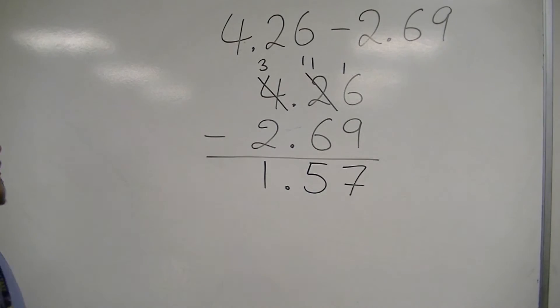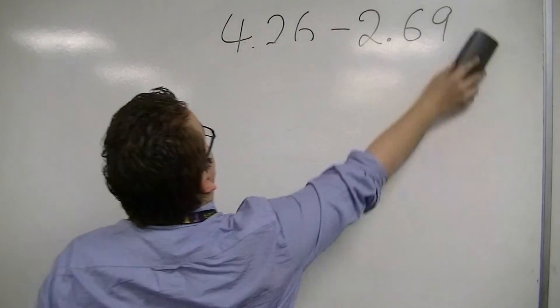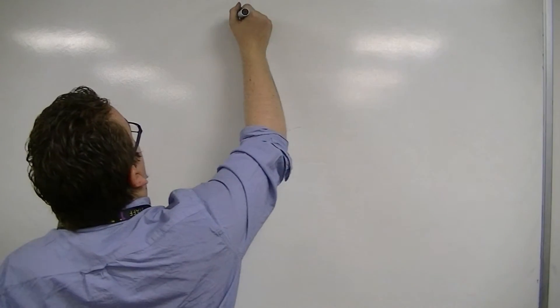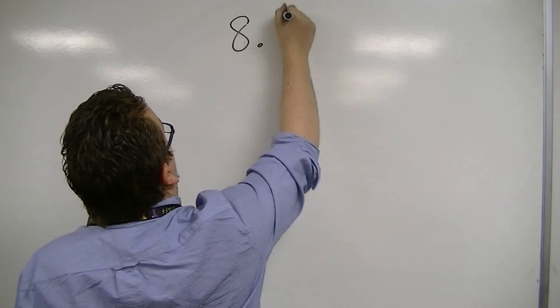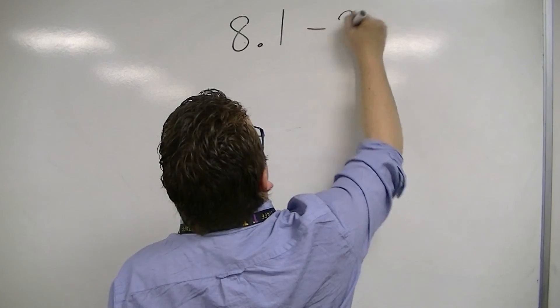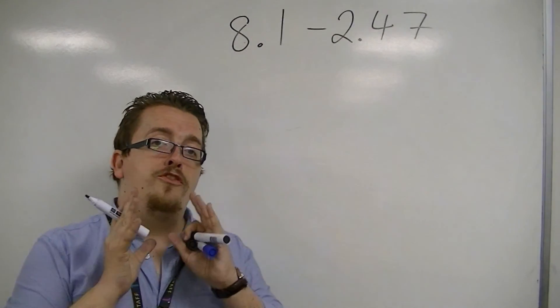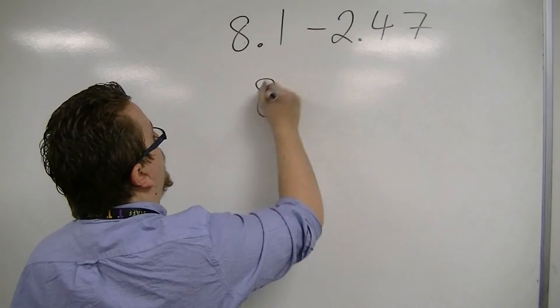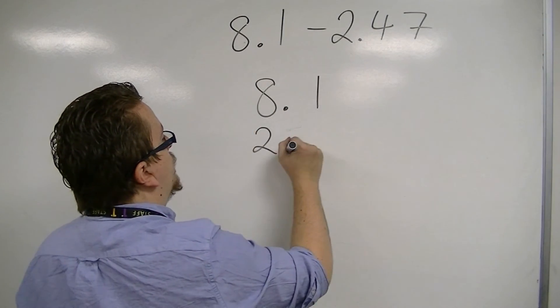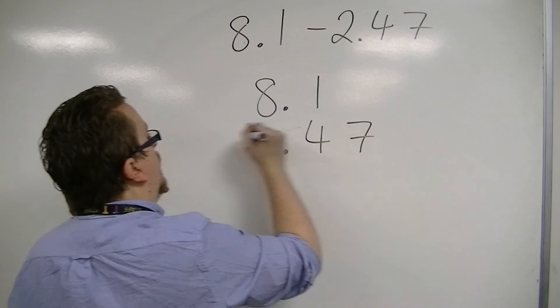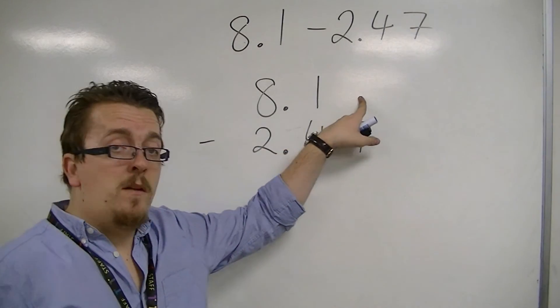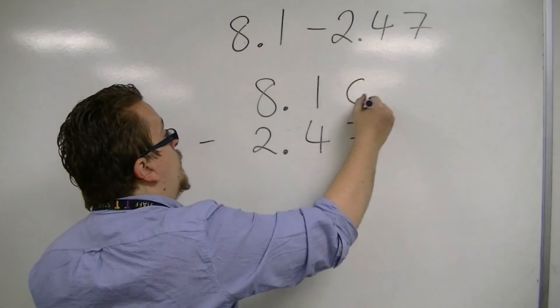One more example. Let's say I have 8.1 take away 2.47. Make sure the decimal points line up. You'll notice we have a gap, so fill it with a 0.